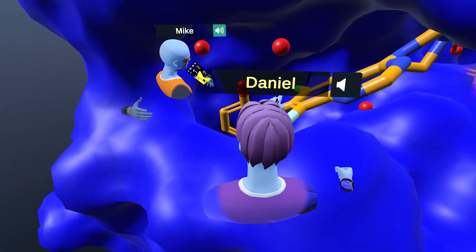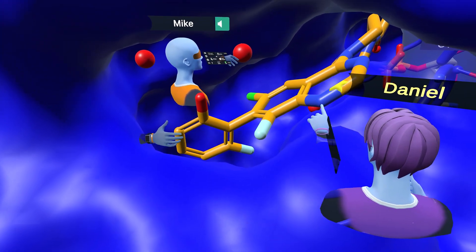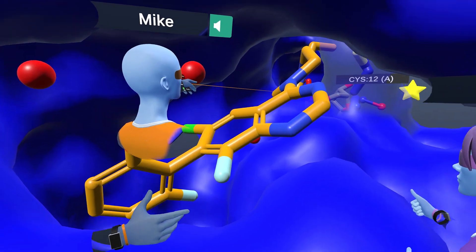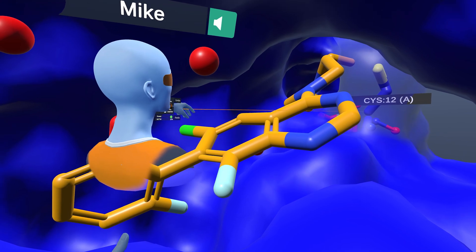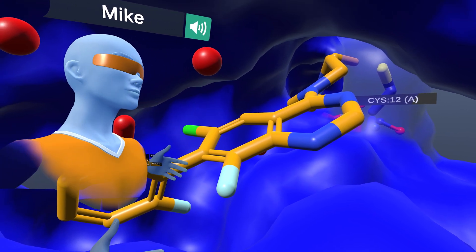So this phenyl ring down here, they left this the same and then left the acrylamide, the warhead for covalent bonding. But the two middle parts, they did scaffold hopping.